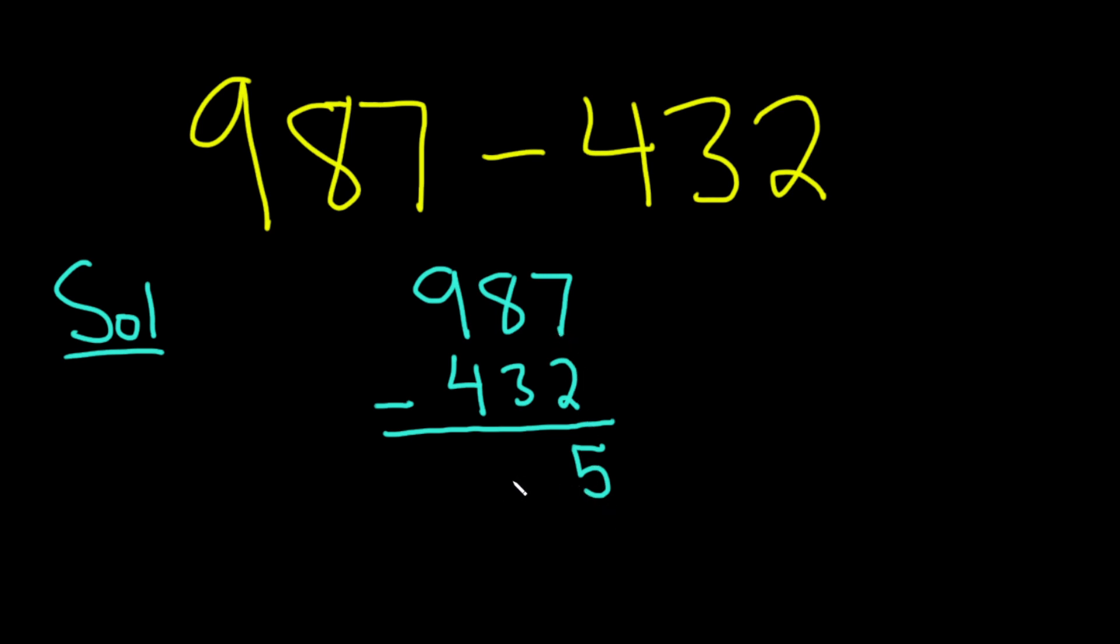So 7 minus 2 is 5. And then 8 minus 3 is also 5. So that's coincidental. And then 9 minus 4 is also 5.